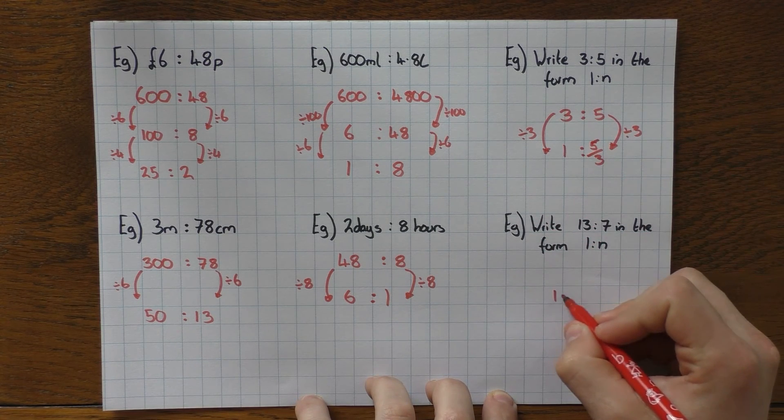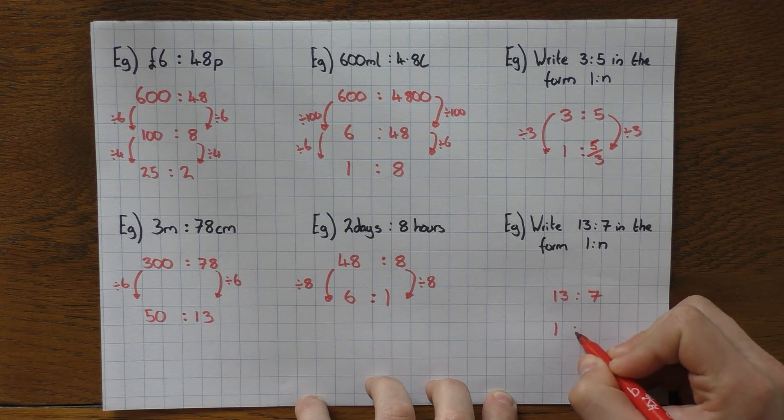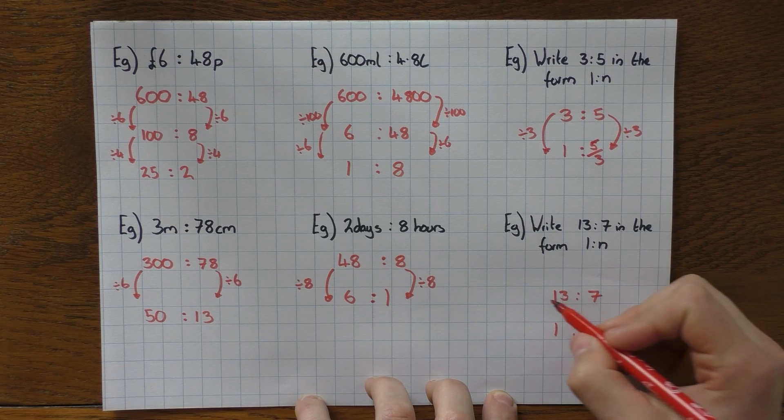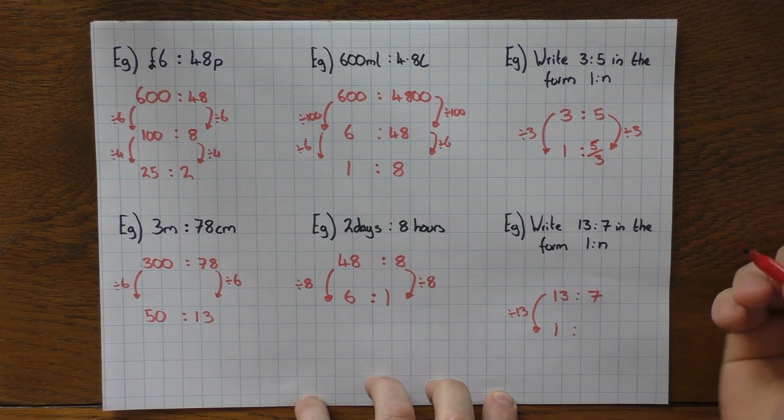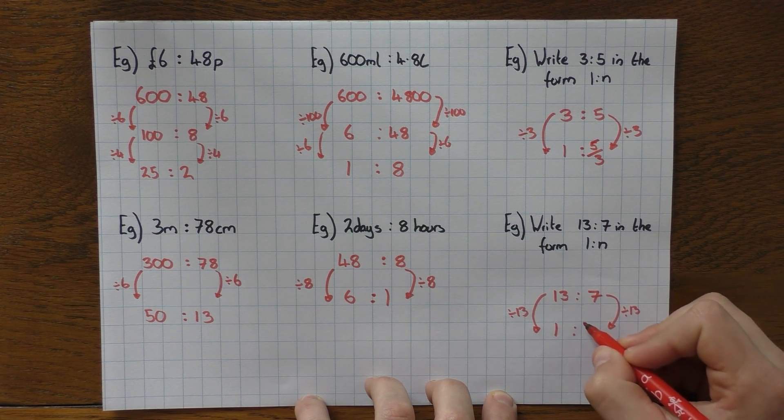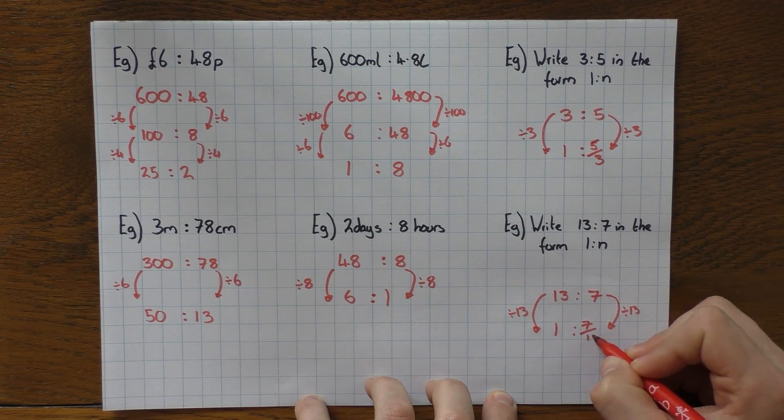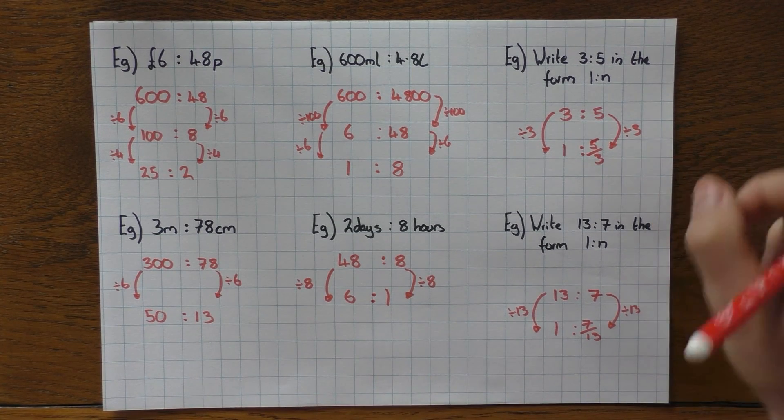Same thing for this one. I've got the ratio of 13 to 7. Needs to be in the ratio of 1 to n. We've got to work out what n is. Well, how do you go from 13 to 1? I just divide by 13. So do the same thing this side. And again, write your answer as a fraction. 7 over 13 gets you the mark. Okay?